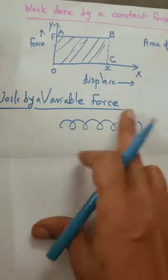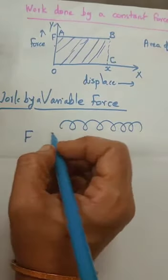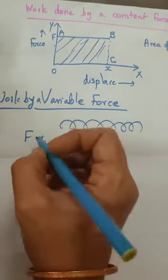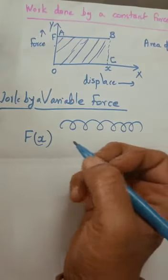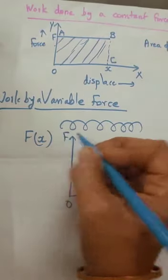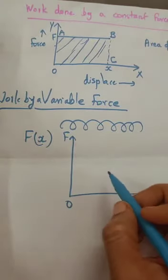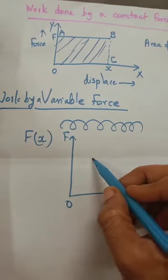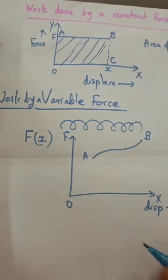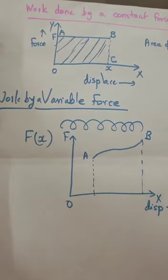In the stretching of a spring, the force required to stretch it increases steadily as the spring elongates. For this force, it is a function of x, where x is the elongation. The magnitude of force is changing — for each elongation, the force required is changing. In this case, displacement is plotted along the x-axis and force along the y-axis, and the shape of the graph is a variable curve. What will be the area under this graph?